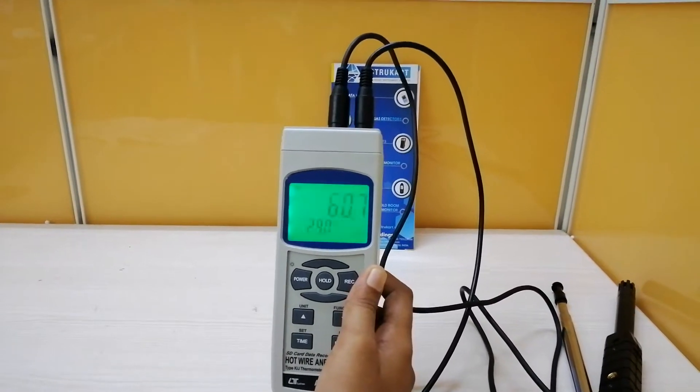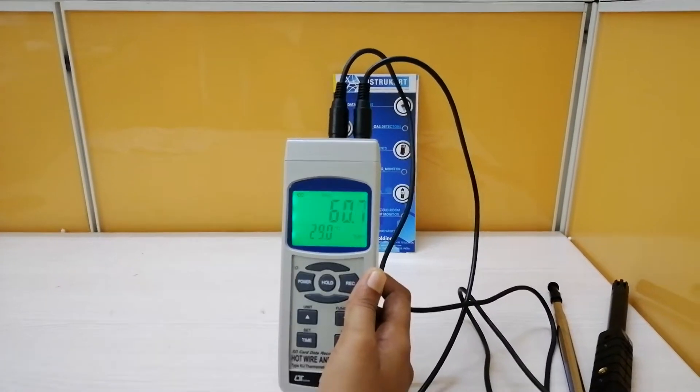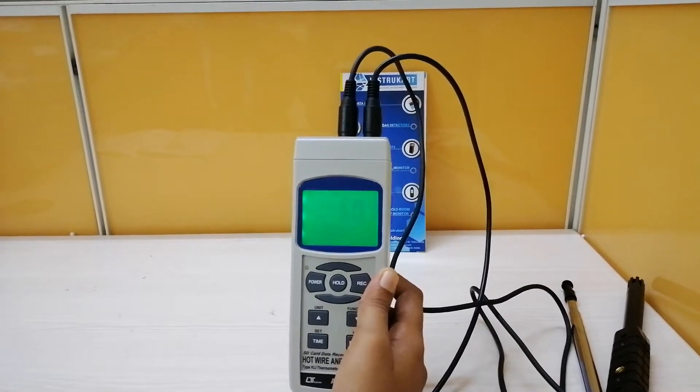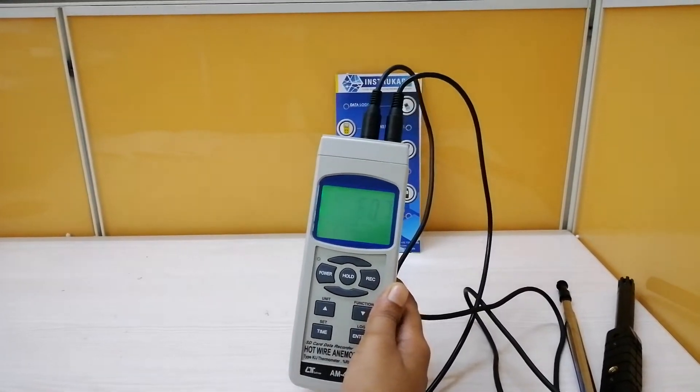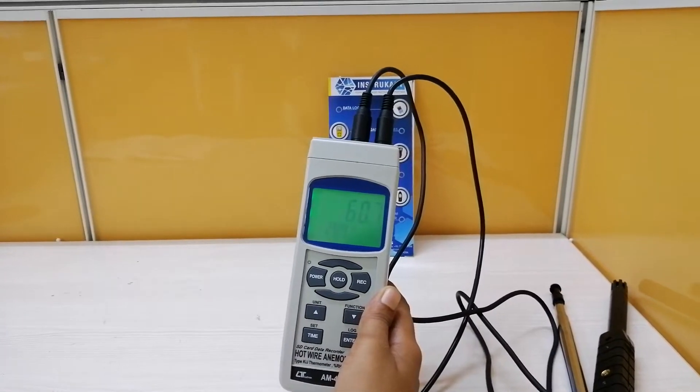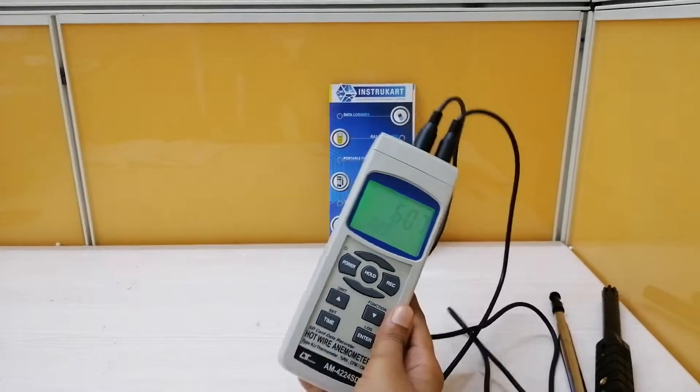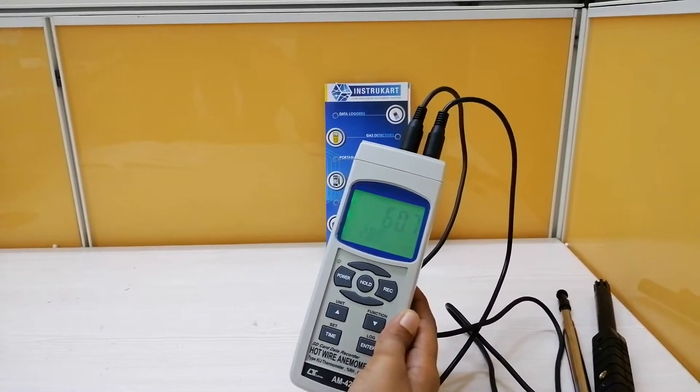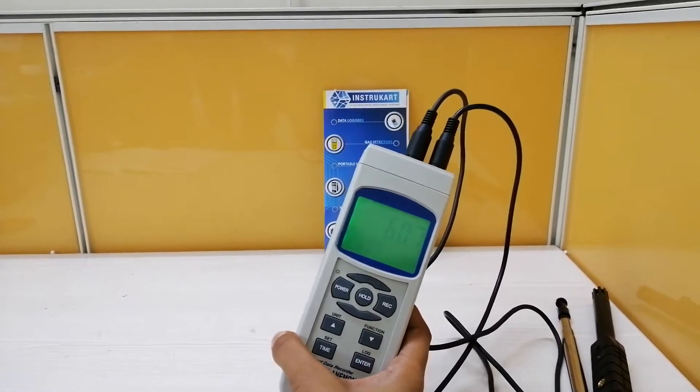Hello, welcome to Instacart Holdings, your worldwide instrument partner. Now I am going to walk you through the product Lutron hardware anemometer of model number AM4224 SD card. This is the SD card anemometer which comes with two probes.